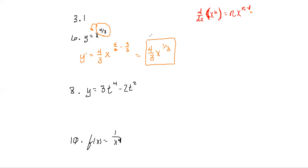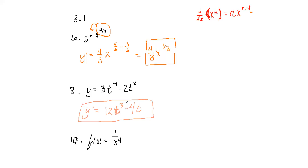That's the derivative — awesome. Try number 8 with the same process. The answer is 12t^3 − 4t. We brought the 4 down to get 3×4 = 12, and 2×2 = 4, then subtracted one from each exponent. What about problem 10 — how would you approach it?